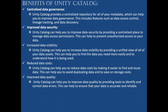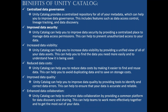Improved data quality: Unity Catalog can help you improve data quality by providing tools to identify and correct data errors, ensuring that your data is accurate and reliable. You can set data quality rules which help you maintain more refined data and correct all data errors.